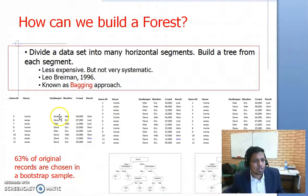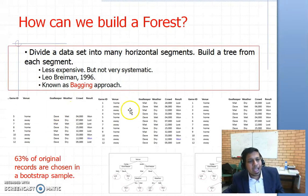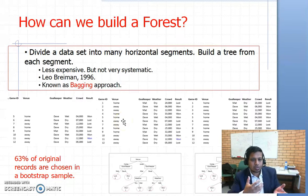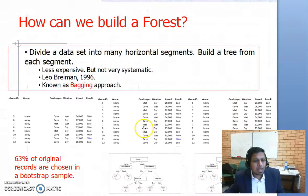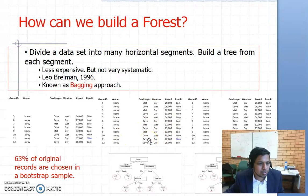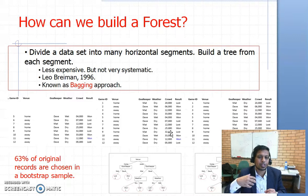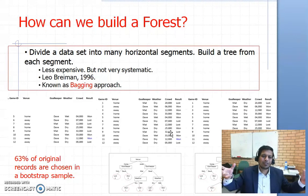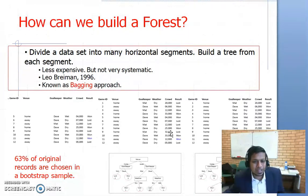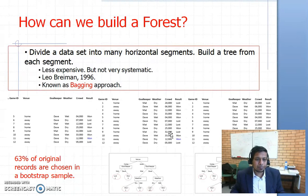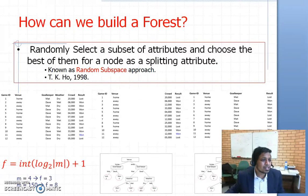They randomly pick some records from the original data set and create a new data set — which is the original data set with some records duplicated and some records not included. From that data set they can use any traditional decision tree building algorithm and build a decision tree. If they build 20 such data sets by randomly picking records with replacement, they have 20 data sets and from those they can build 20 trees. That's how you have an ensemble of trees — a forest. There are many other approaches as well, such as random subspacing and random forest, which is a combination of both.